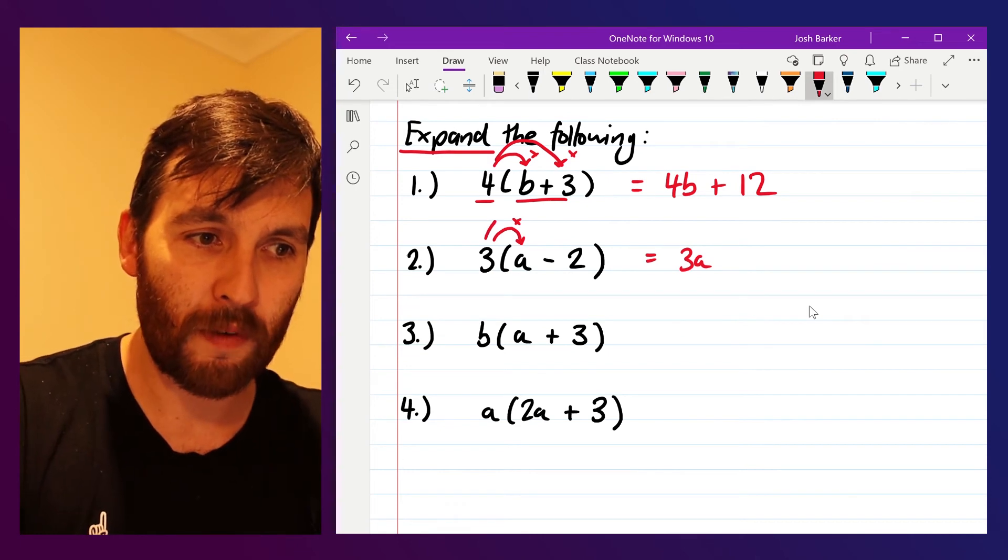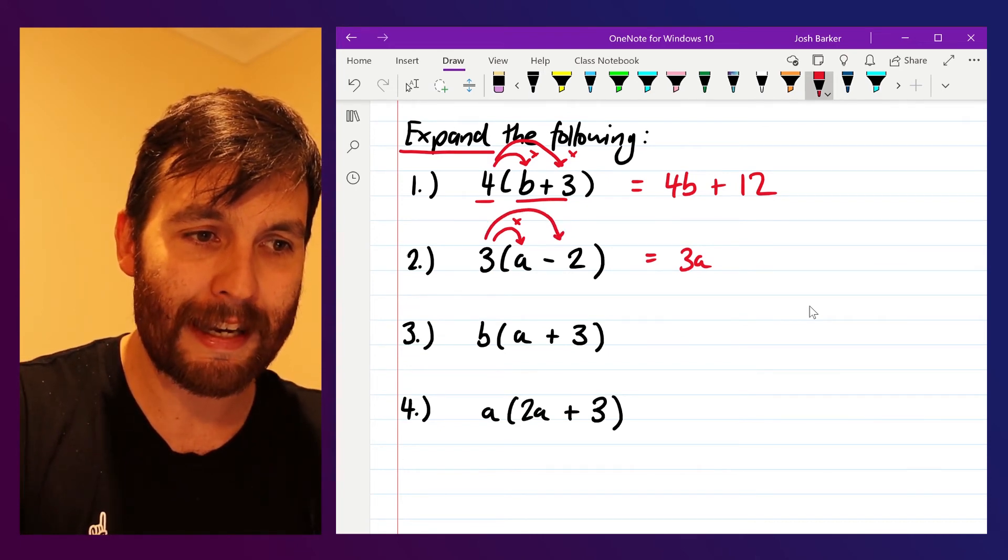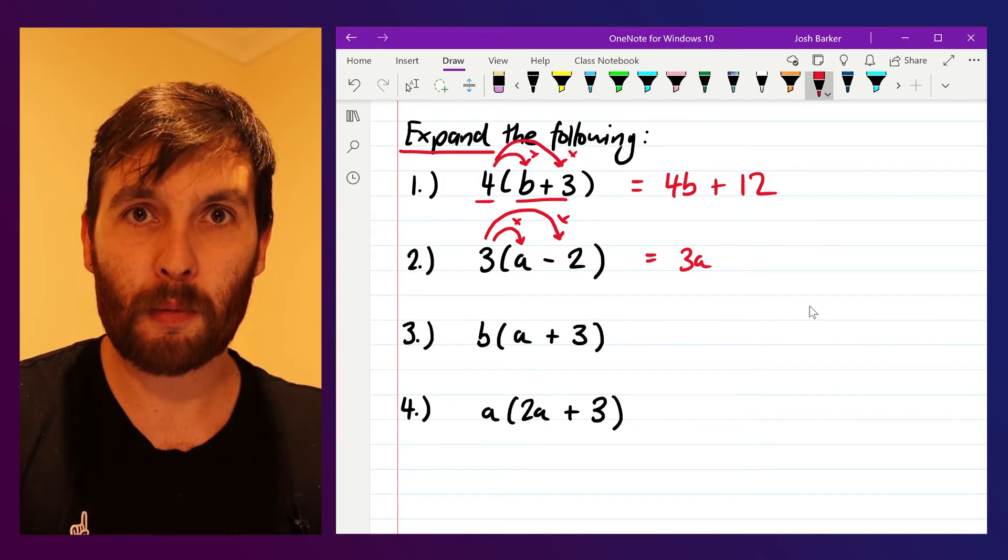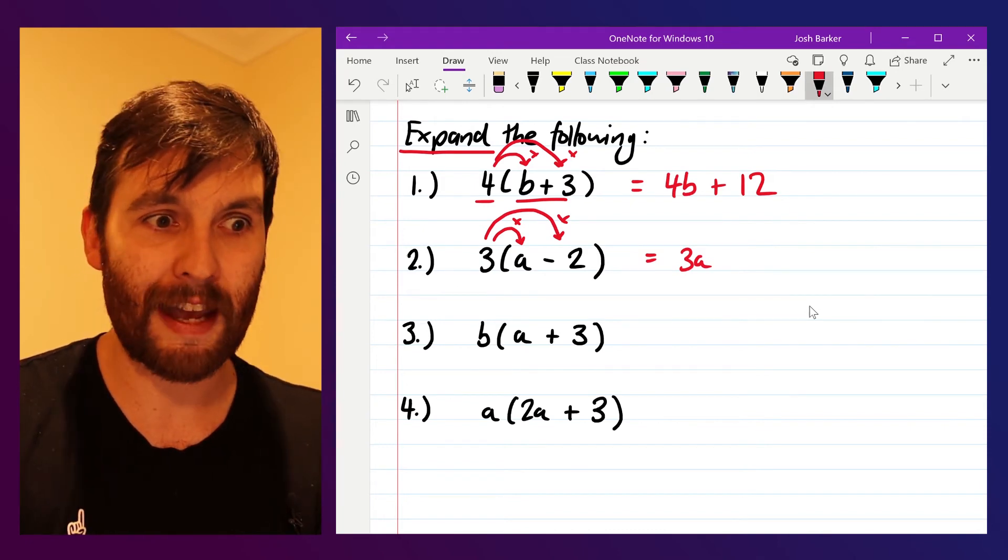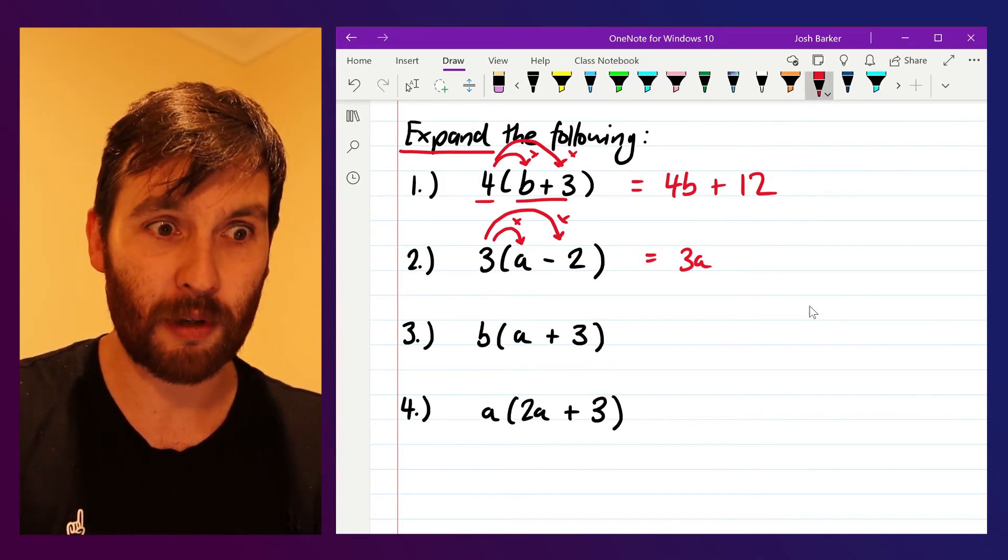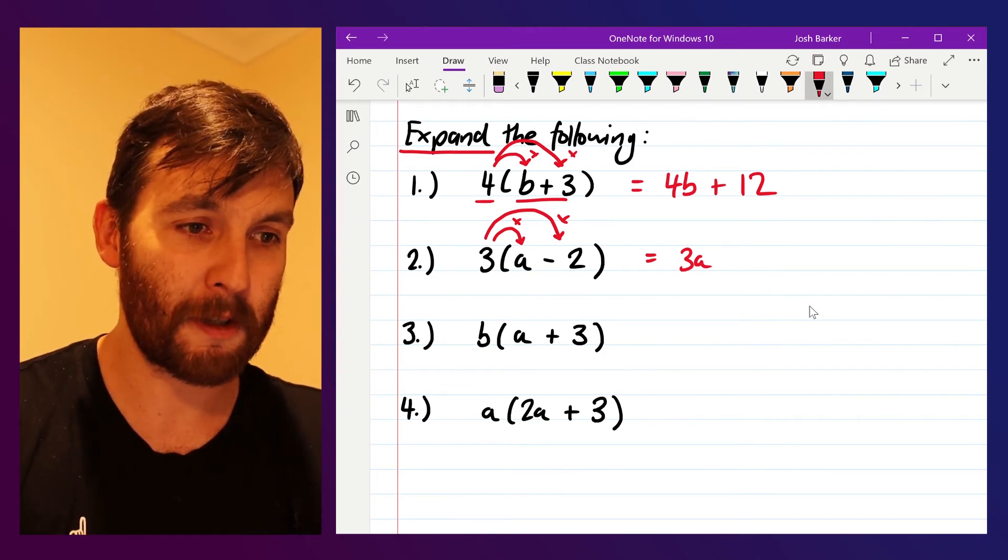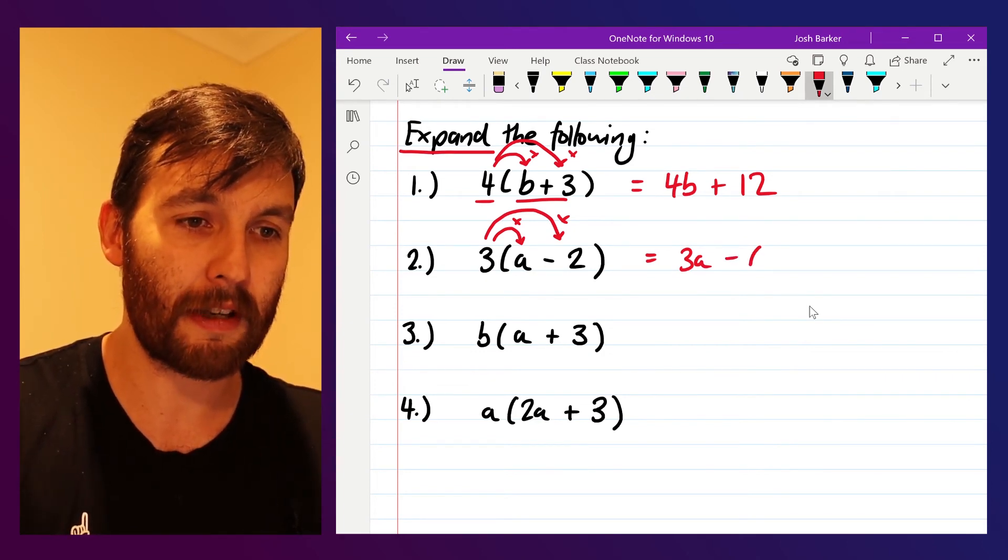The next part though, we've got three multiplied by negative two. So we've got to remember our rules for when we multiply positives with negatives. So positive times negative will give us a negative. So three multiplied by negative two will give us negative six.